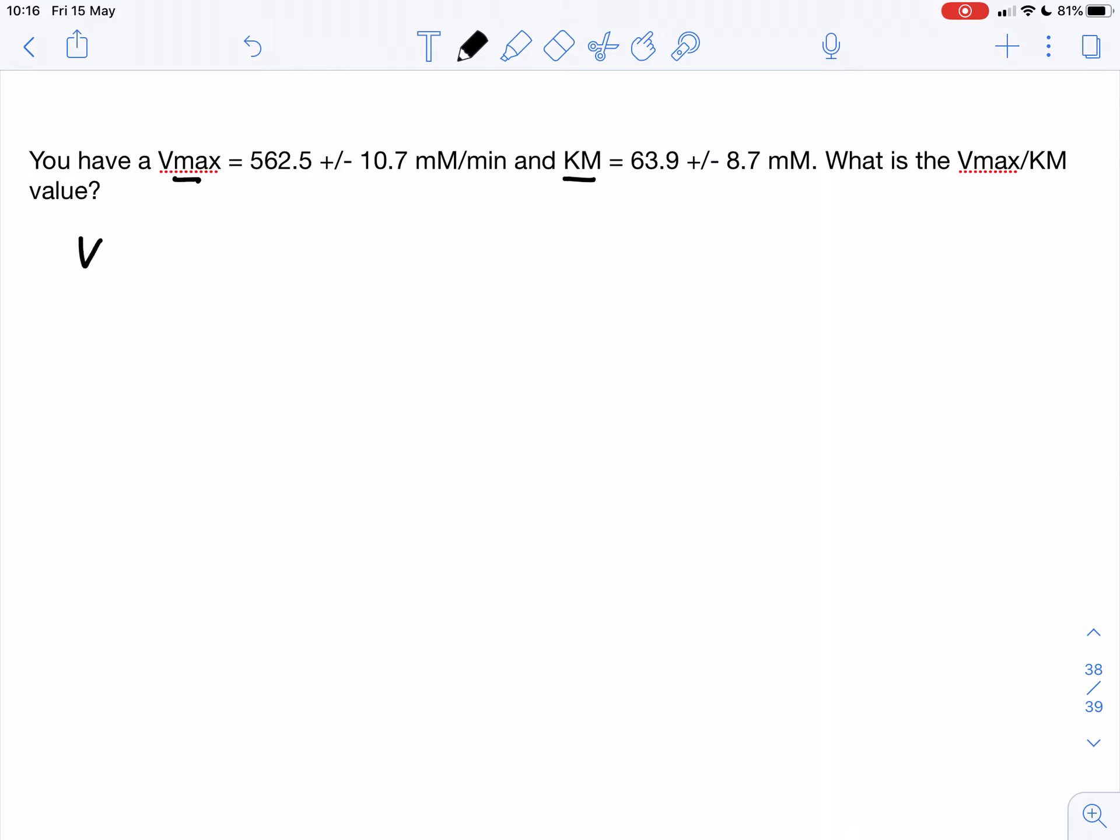First of all we can very easily calculate this ratio Vmax over Km equals 562.5 mM per minute divided by 63.9 mM. And if we put that in a calculator we get a value of 8.803 minute to the minus 1. So that is the first part of the calculation.